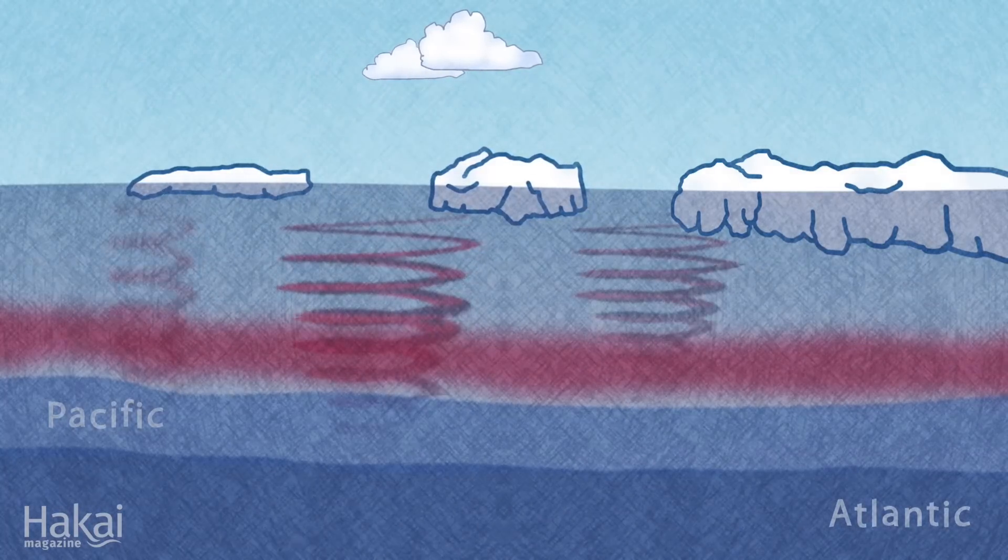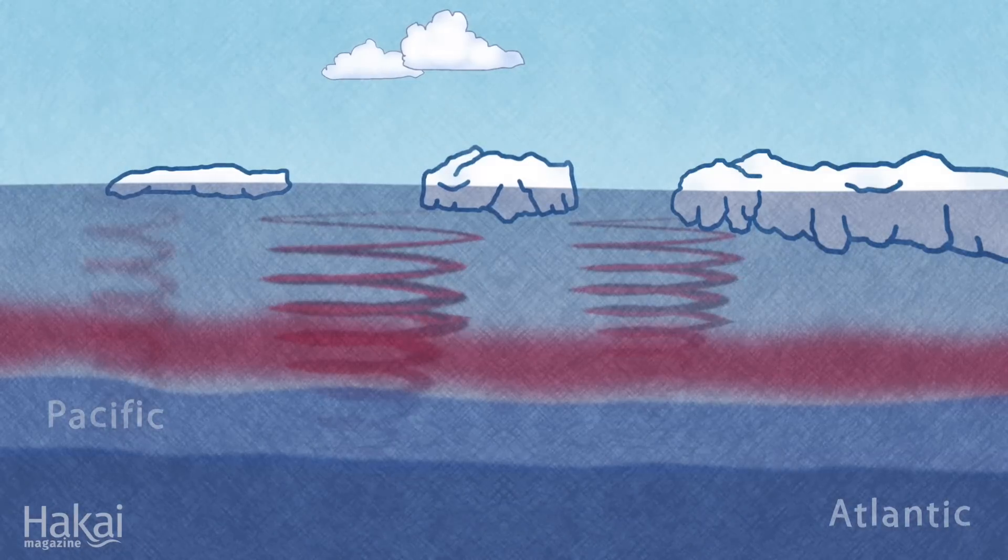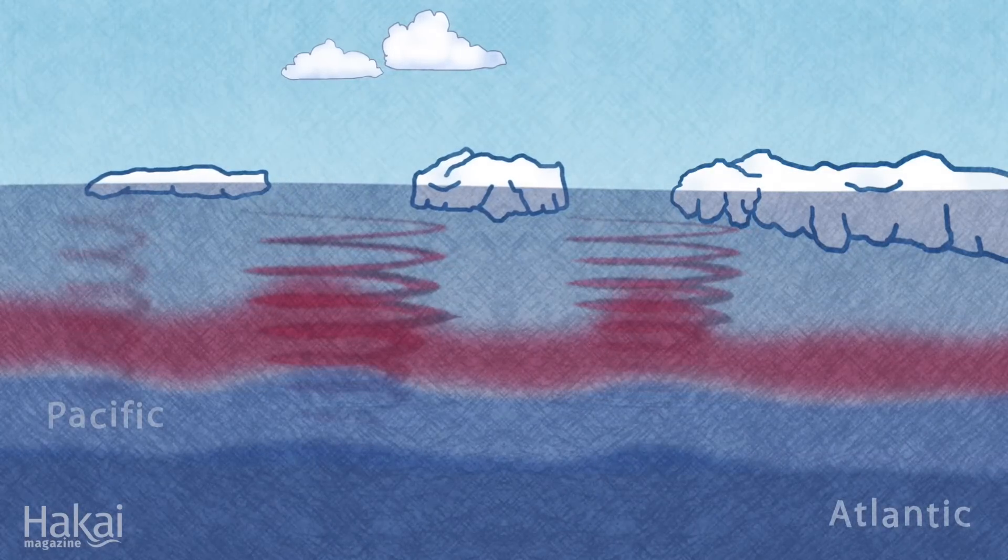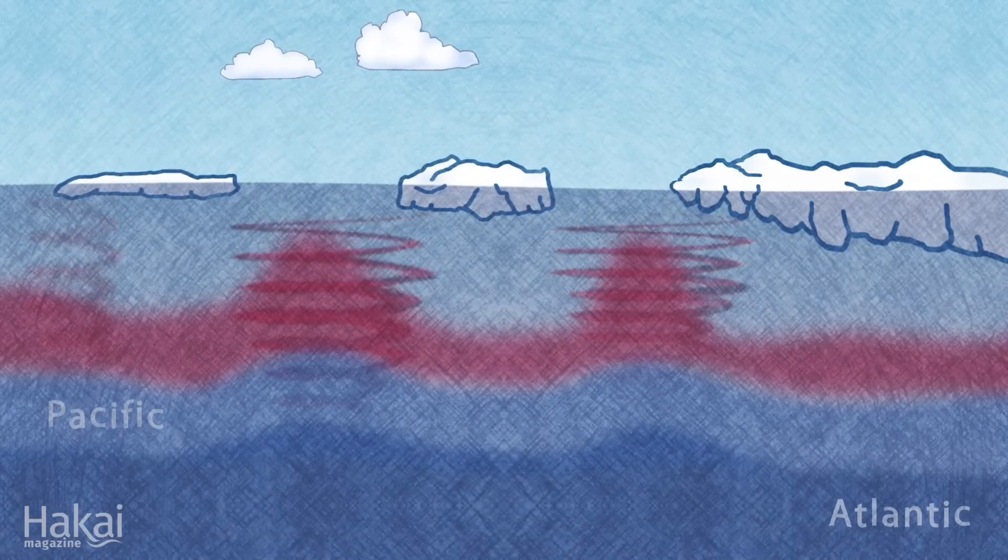And as more warm water reaches the surface, even more ice is melting, creating a loop that continually increases the melting.